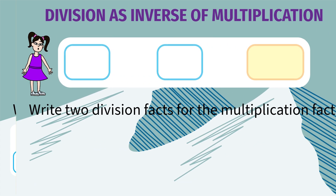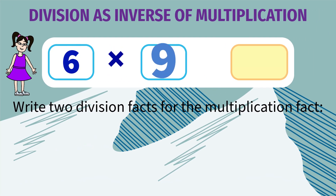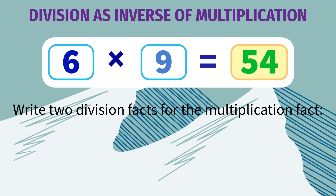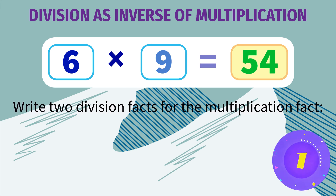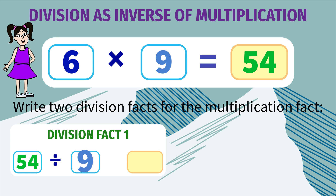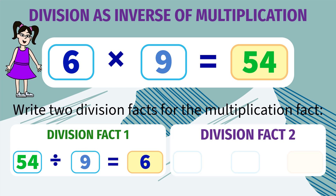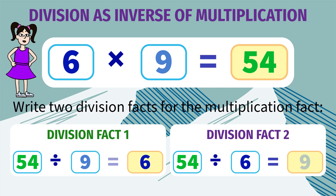Write two division facts for 6 into 9 equals 54. Here, the two division facts are 54 divided by 9 is 6, and 54 divided by 6 is 9.